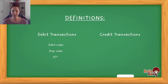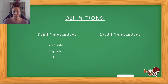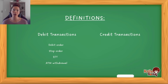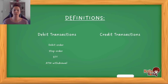Then EFT — electronic funds transfer — is where you use a banking app and make a payment to someone else's account or a service provider's account from your banking account. Money again is leaving your account. And if you go to the ATM and withdraw money, obviously money is leaving your account — so that's a debit transaction and your account will decrease. These are all the possible debit transactions — how money can leave your bank account.